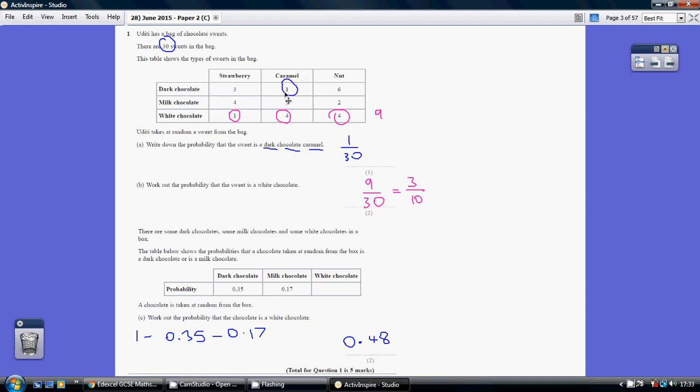Now they're not asking us of the caramel sweet, so it's not out of ten. We're working out the probability that the sweet is a dark chocolate caramel. So it's one of them out of a total of thirty sweets, so one out of thirty.